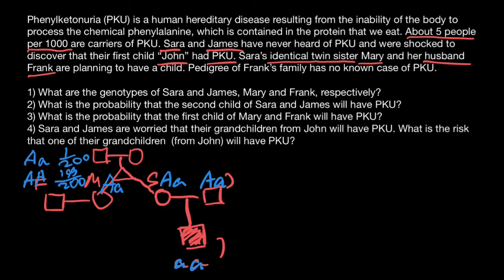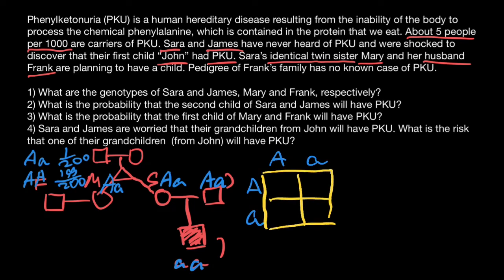Now let's answer the second question: what is the probability that the second child of Sarah and James will have PKU? The answer is straightforward. Using the genotypes of Sarah and James and building a simple Punnett square, we get: capital A capital A, capital A small a, capital A small a, and small a small a. As you see, the probability for the second child to be affected would be one quarter. That is the answer to this question.